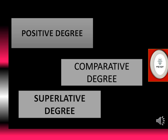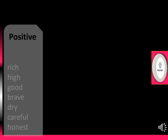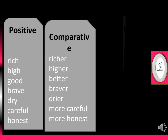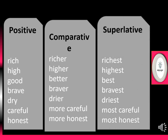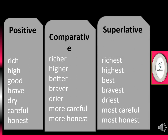The very first we have positive degree, next comparative degree, and the third one is superlative degree. Here we have a few examples of positive degree, comparative degree, and superlative degree, just to find out the difference between all these three degrees.